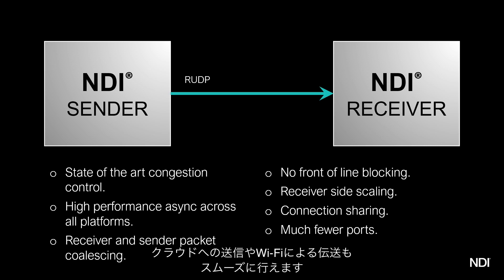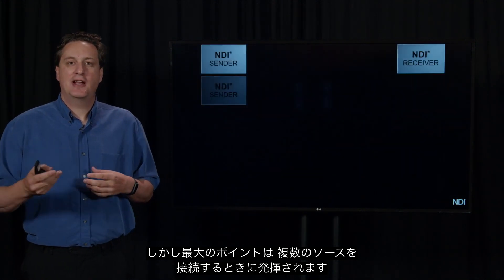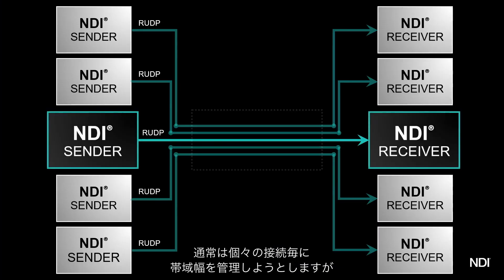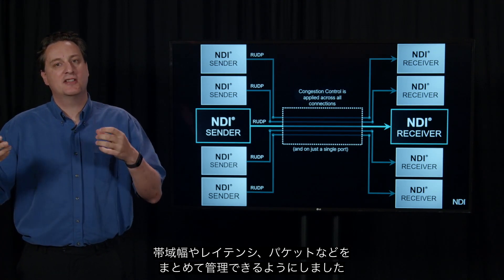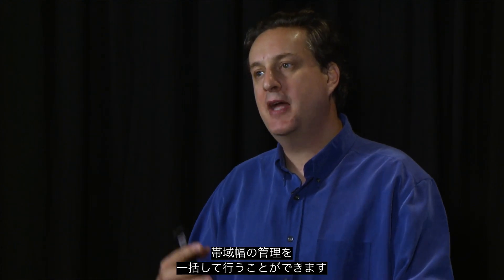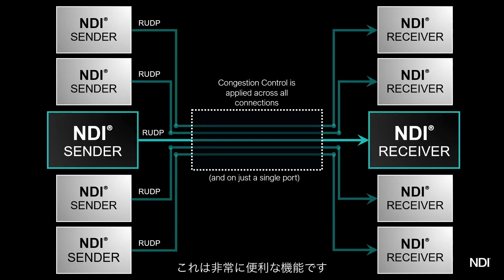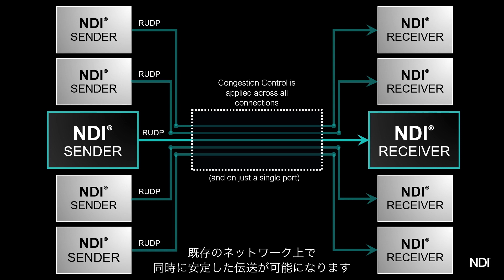The really big thing we did sits on top of that. Instead of each connection individually trying to manage its own bandwidth — each camera-to-production-system connection gauging its bandwidth, managing its latency, managing its own packets — we made it so that NDI unifies all the streams in and out of a system and manages the bandwidth across all of them at once. The difference made by this is absolutely huge. This is what allows NDI version 5 to truly adapt and have a very large number of streams all working reliably on the network you already have.